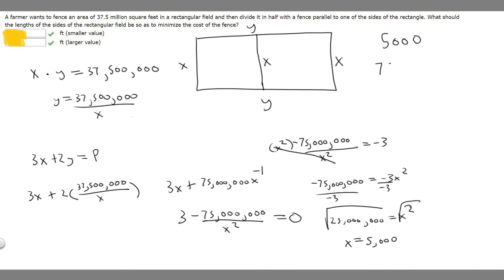So our two values are going to be 5,000 and 7,500. And so what we're going to do is put our smaller value first, so 5,000 and then 7,500. And so these are going to be the answers to this question.